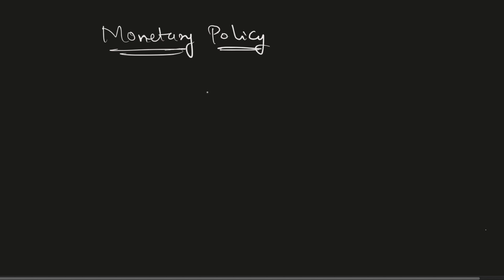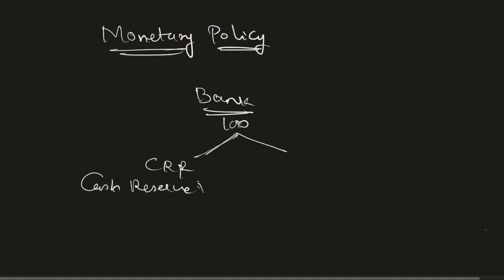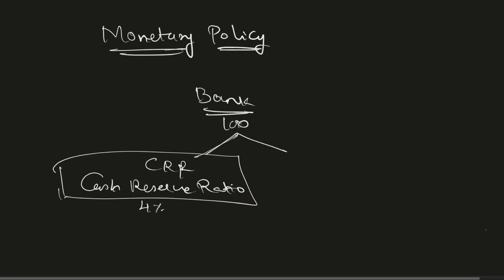Let's begin with your bank. Say you are depositing 100 rupees in your bank — does that mean the bank can lend all 100 rupees and make business out of it? No. There are rules and restrictions set by the regulator RBI. There is a term called CRR — Cash Reserve Ratio. If the CRR is 4%, then out of your 100 rupees, 4 rupees must be kept with the RBI as cash reserve, and RBI will not even pay interest on this amount.